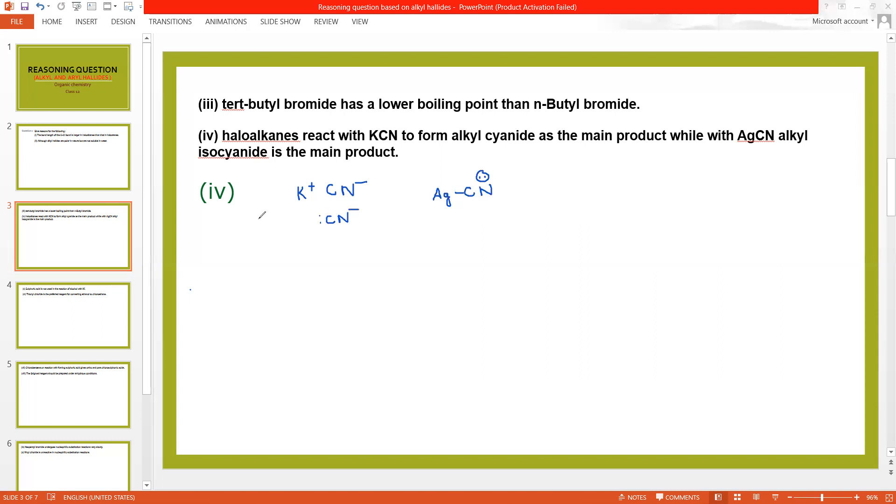So this is the reason that if any alkyl halide, suppose if I take methyl bromide, methyl will directly attach to carbon of cyano group rather than nitrogen because carbon-carbon bond is more stable than carbon-nitrogen bond, depending on the electronegativity difference is zero.